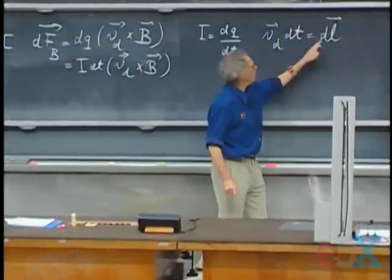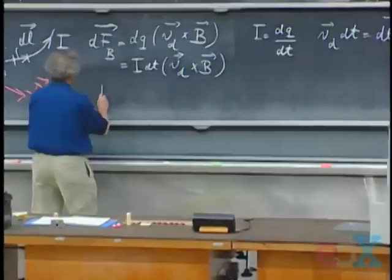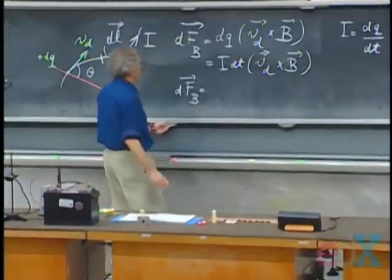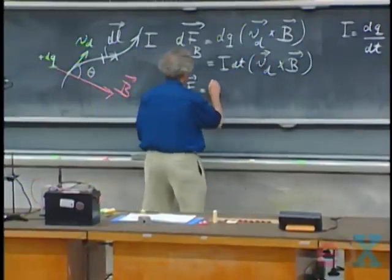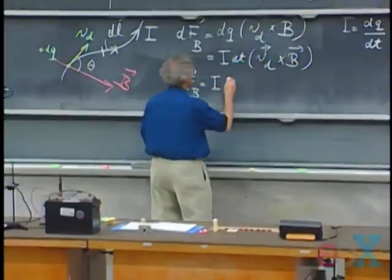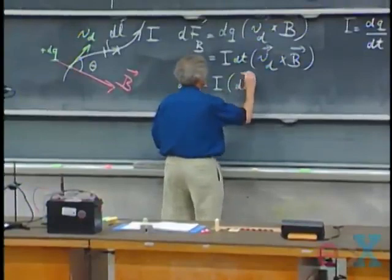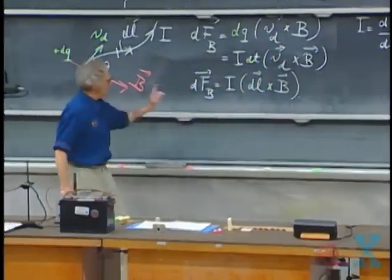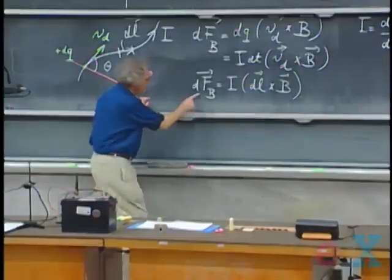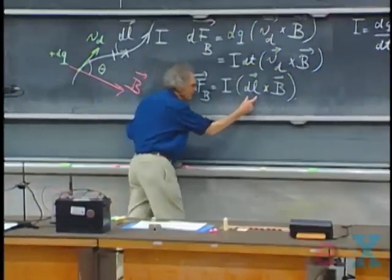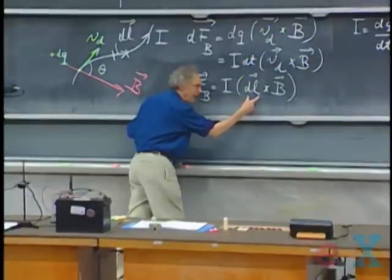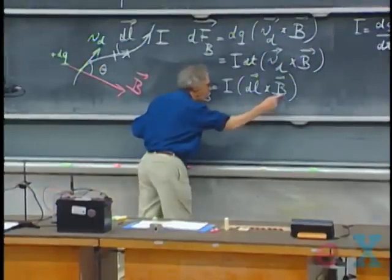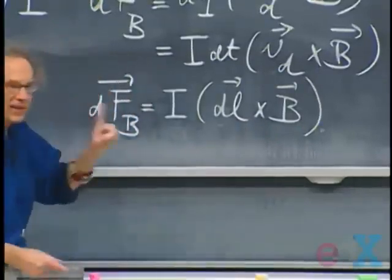So I can write down for this product, I can write down DL. So I can also write down that DF of B equals I times DL cross B. What is this telling you? This is the force on a wire over a small segment of the wire which has length DL.